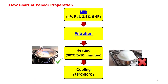Now we will see the flow chart for paneer preparation. First, milk with around 4% fat and 8.5% SNF — that is standardized milk — undergoes filtration to remove any dirt and floating substances. Then it is heated to around 90 degrees Celsius for 5 to 10 minutes for pasteurization, for safety, and for killing all pathogens and most other organisms. After that it is slightly cooled to around 75 to 80 degrees Celsius, which is the ideal temperature for coagulation.